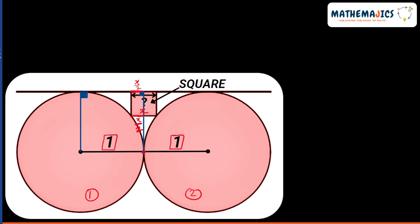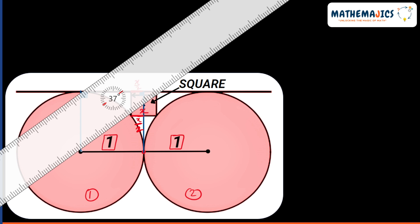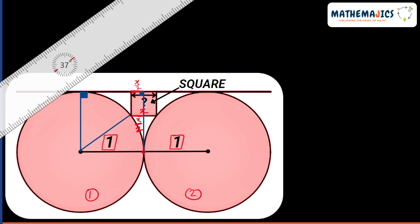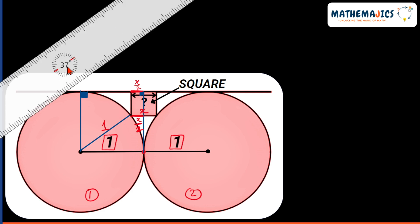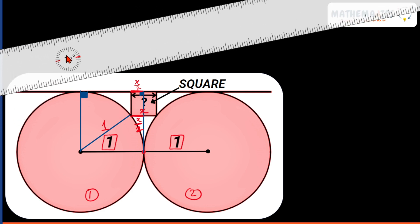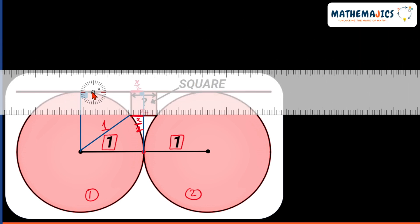Now I will draw one more line that will help us solve the question. This line will originate from the center of the circle and meet the corner of the square — this line is nothing but the radius of the circle, so it equals one. Apart from this, I will draw one more line joining the center and the corner of the square, parallel to the common tangent.